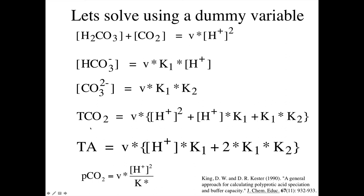Using our mass balance and charge balance: total CO2 is the dummy variable times (H+² + H+·K1 + K1·K2), which is the sum of the first three species. Total alkalinity is the dummy variable times (H+·K1 + 2·K1·K2). PCO2 is the dummy variable times H+² divided by K*.